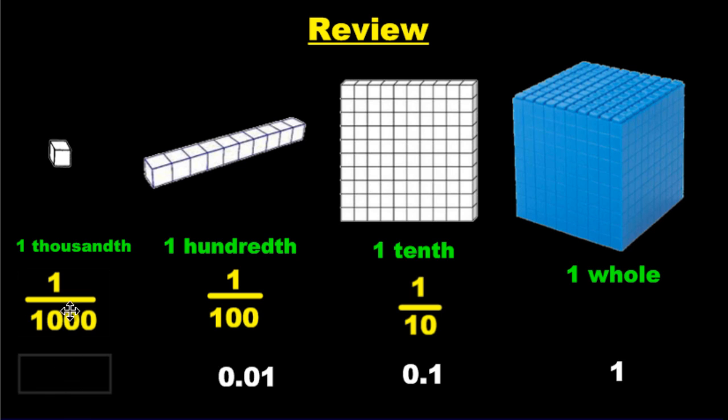1/1000: 0.001. Because for the same reason we have tenths, hundredths, thousandths, the third spot after the decimal is the thousandth spot.